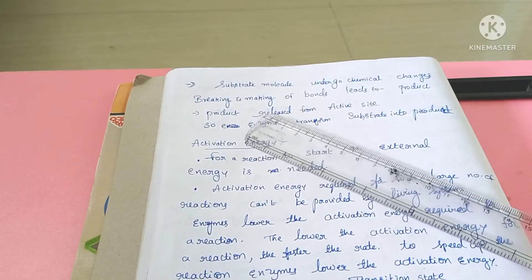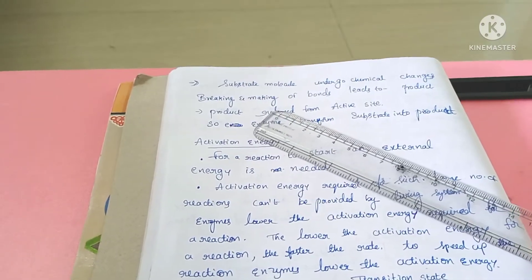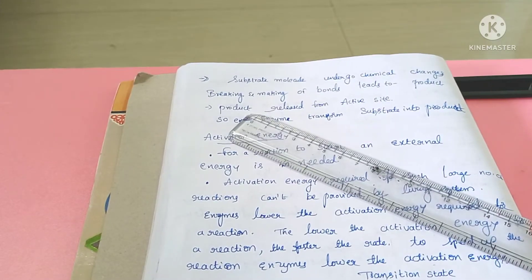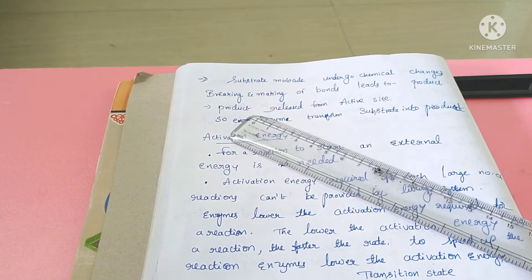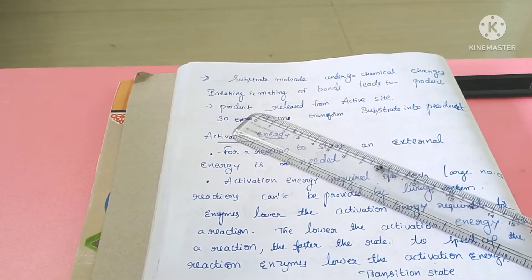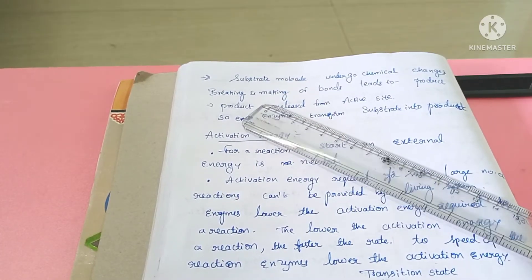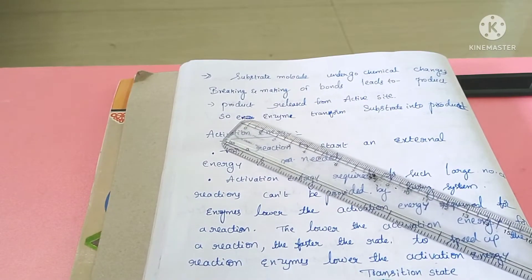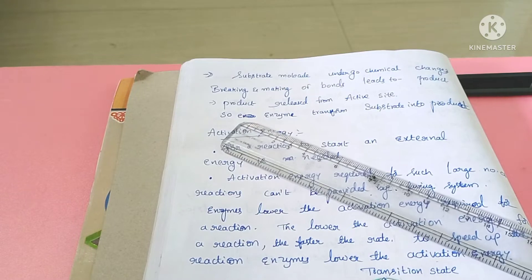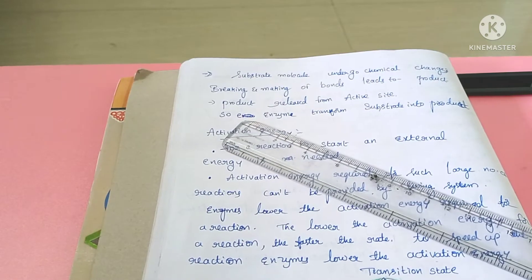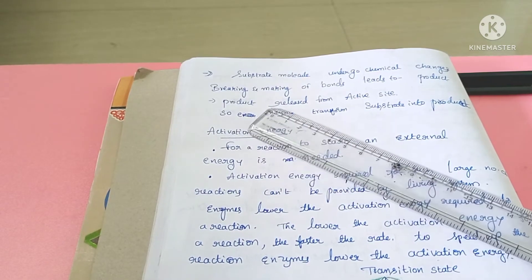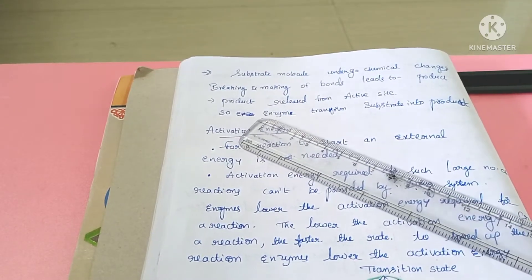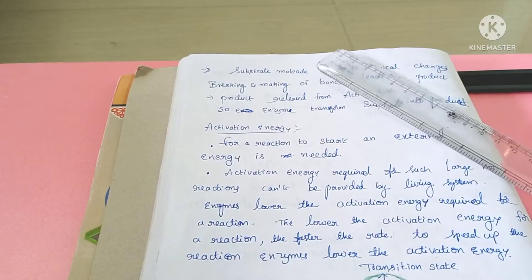In the active site, there are some chemical changes in the substrate — some bonds are broken and new bonds are made. When the product is formed at the active site, the product is released by the enzyme; they are separated. The enzyme is then free to act on another substrate, and the product is transformed through these chemical reactions.